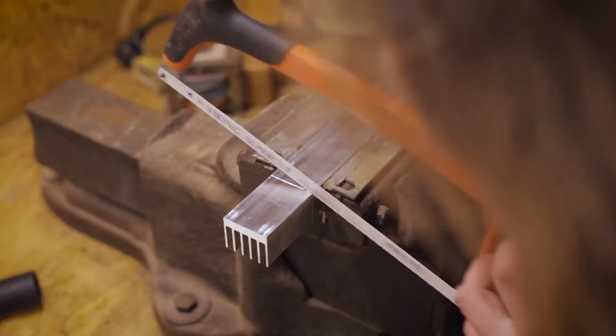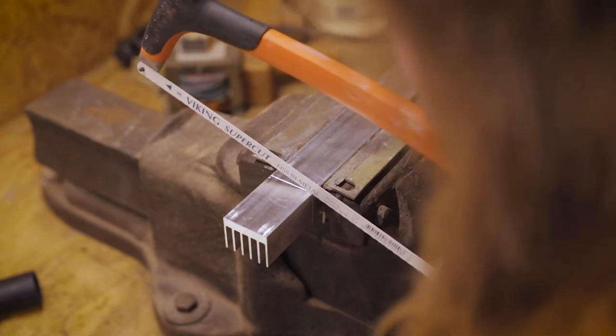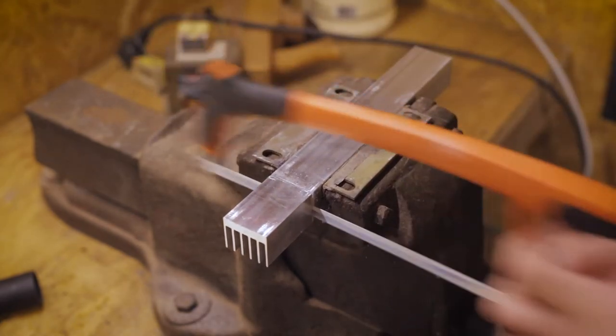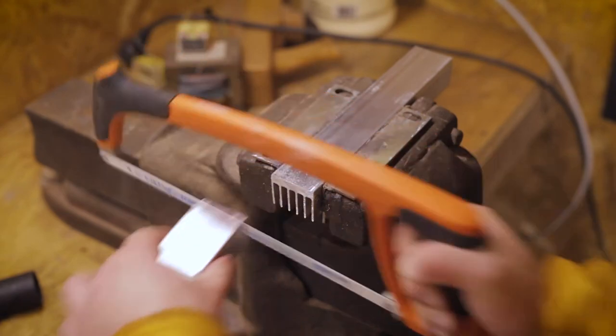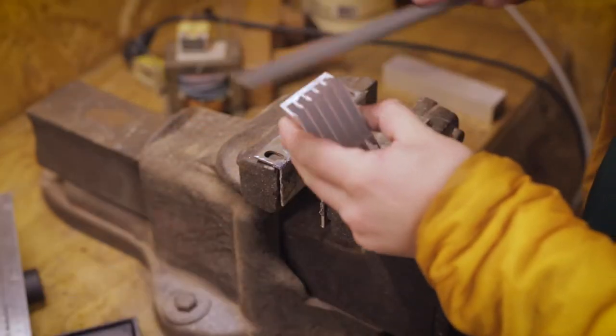Therefore, I got hold of this bigger heatsink and started cutting it to a suitable length. It has a larger surface area and is overall just more hefty, letting it conduct more heat away from the LEDs and the PCB.